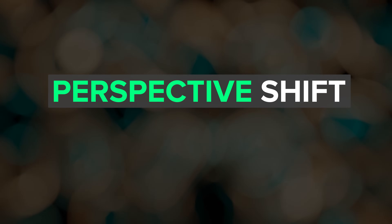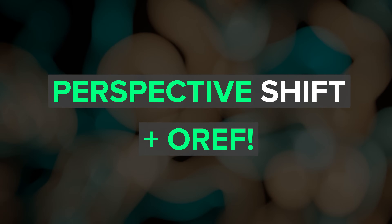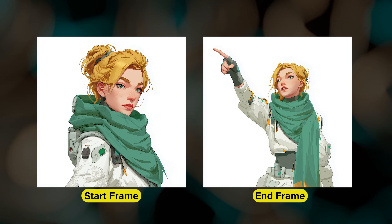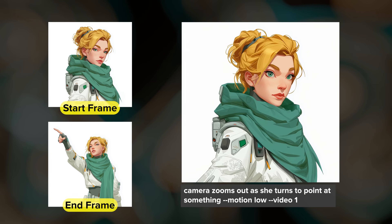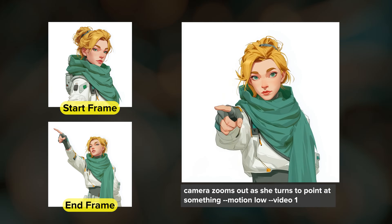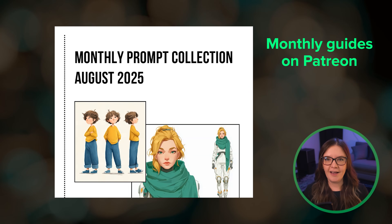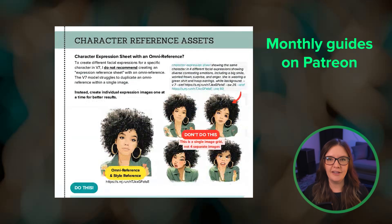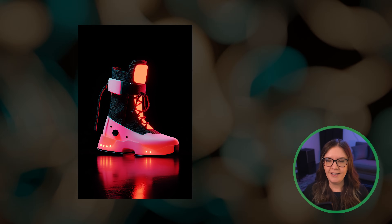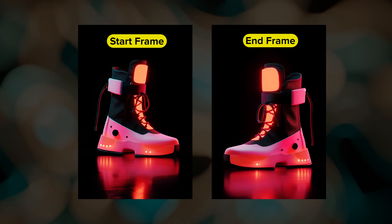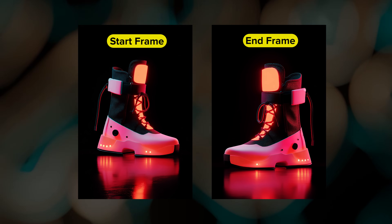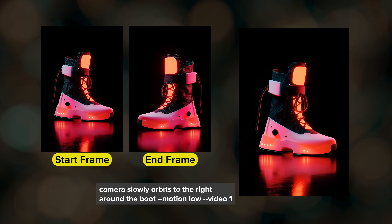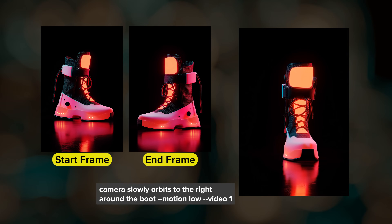Another great use for start and end frames is creating a perspective shift using images created with an omni reference. I started with this front view of a character, then I created another angle of the same character and used these as the start and end frames to create a clip of her pointing. You can use this approach with objects too — I used this boot as an omni reference to create a new image of the boot from a different angle, and then with start and end frame I was able to get a rotation of it. I did prompt for the camera to move around the boot but instead got the boot rotating in place.